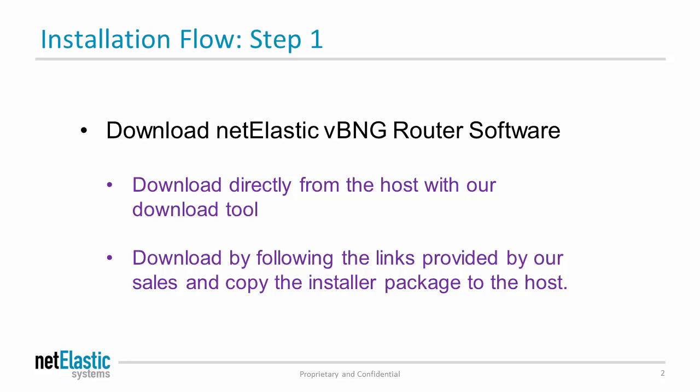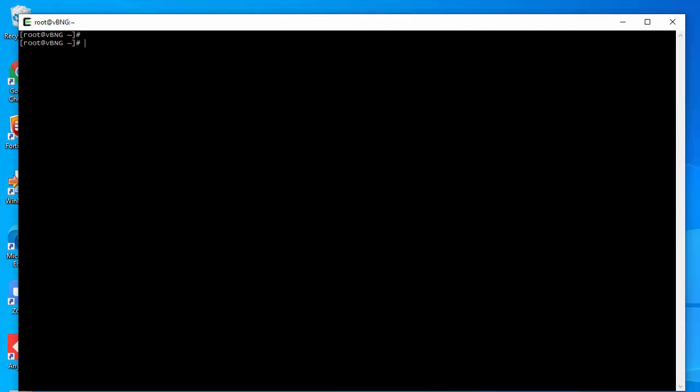There are two ways you can download our software. You can use our download script, which I will show you shortly, or you can request a download link from our sales team and then copy the download file to the host where you're going to install our vBNG router.